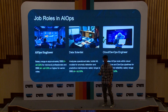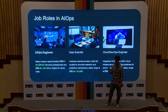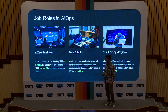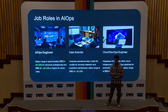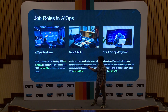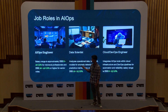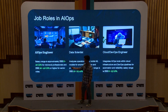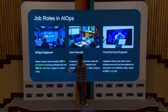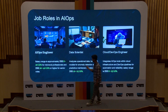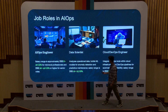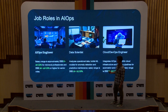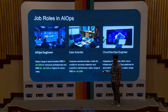For job roles, we have AIOps engineer, which is a combination of DevOps who uses AI — a person who knows all these tools could work as an AIOps engineer in companies. This is a small salary range shown here, but it could be more depending on the company. Data scientist is again an emerging role. Lastly, we have cloud DevOps engineer. These are some job roles you could expect with the AIOps market growing.